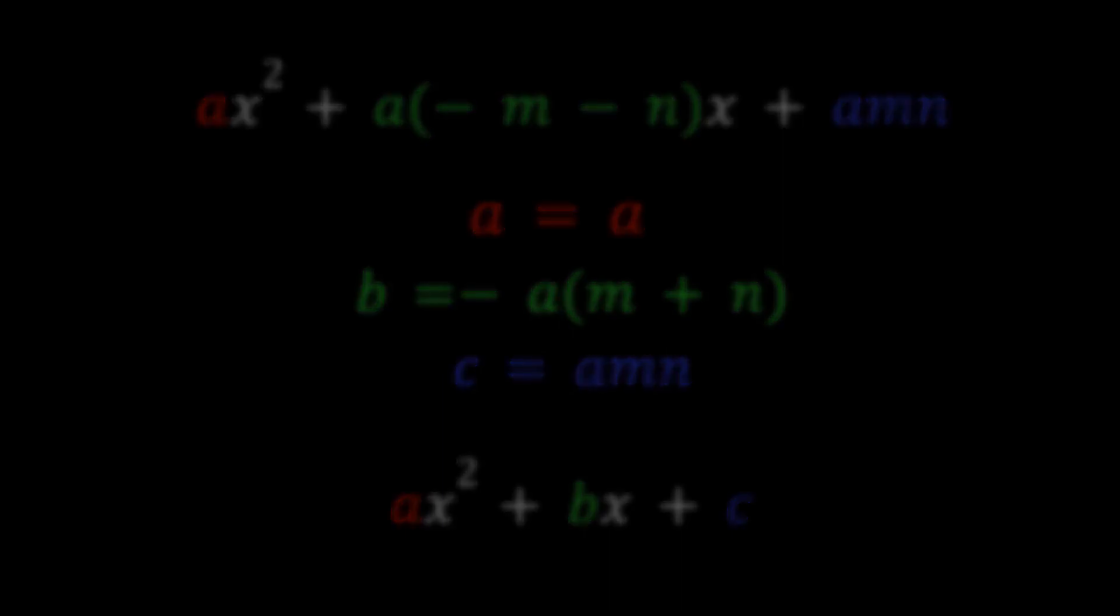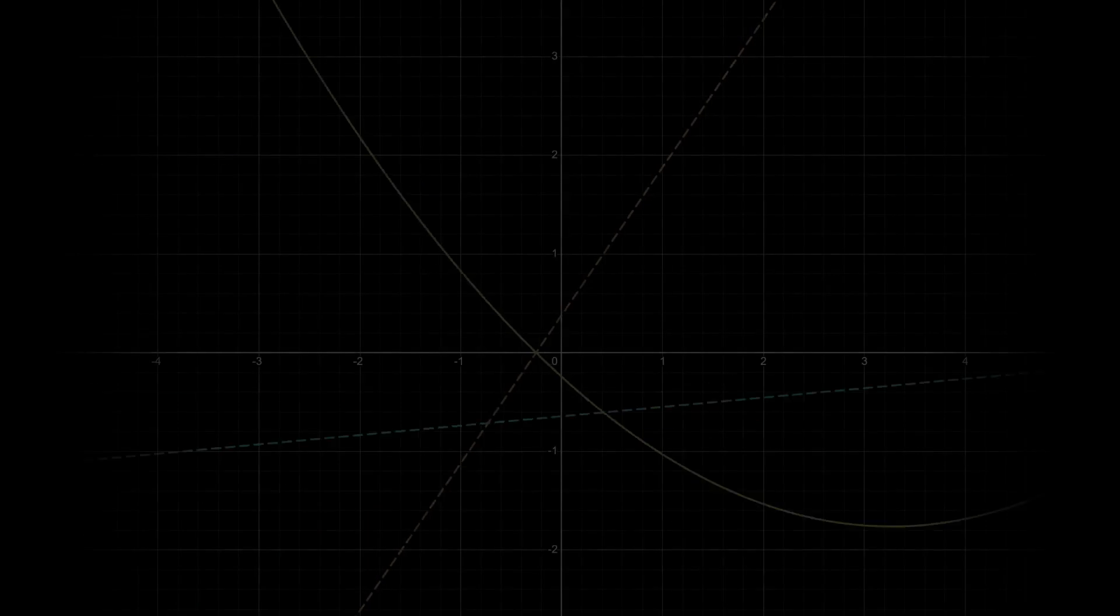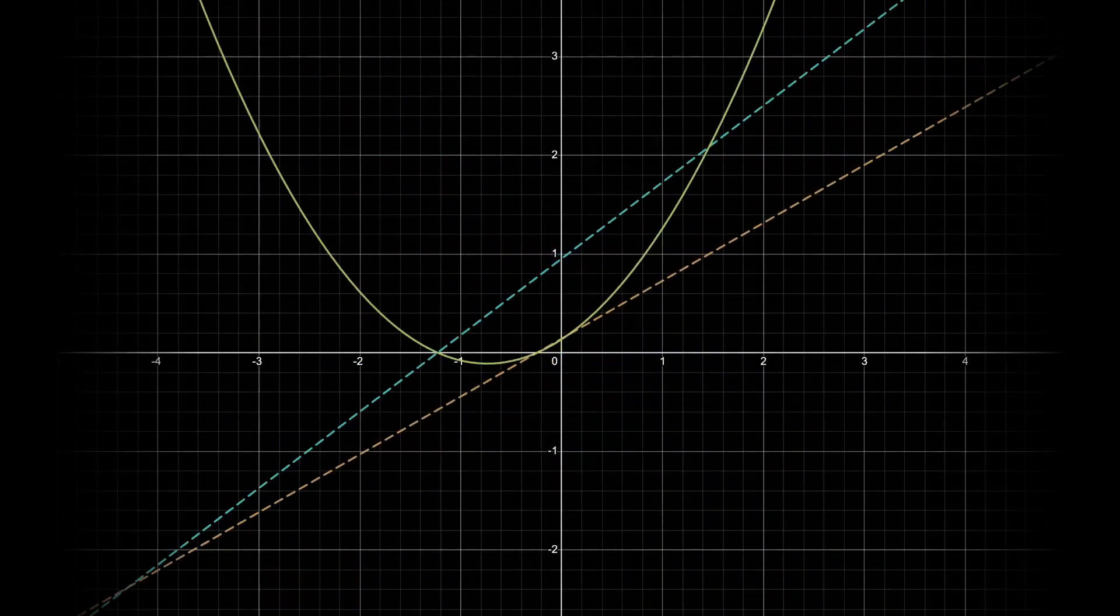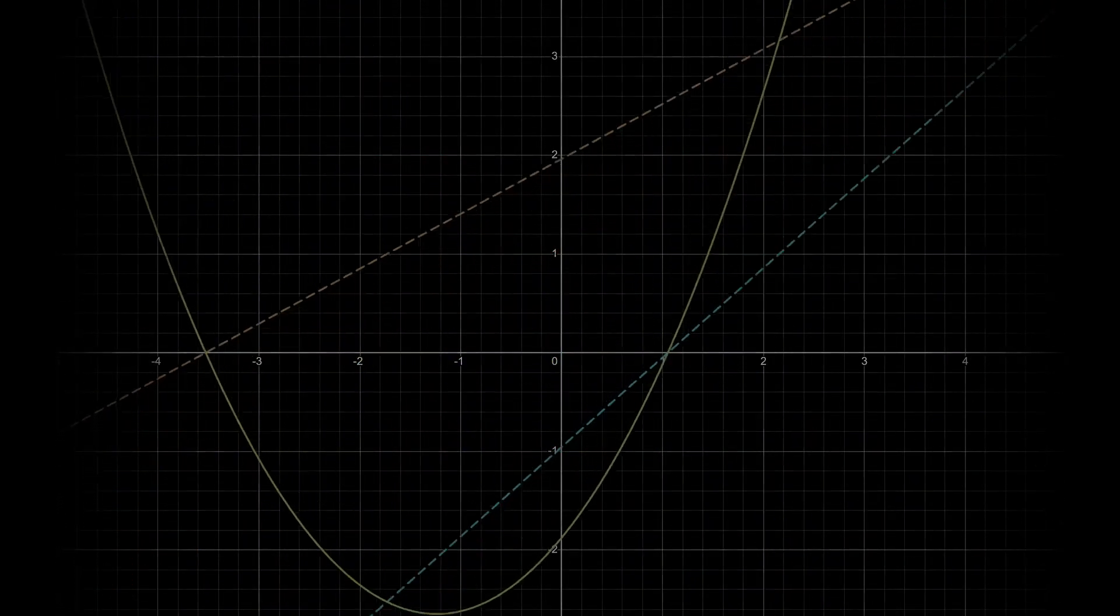Converting from standard to factored form is a little trickier because you need to use the quadratic formula. After all, the linear factors of a parabola have the same x-intercepts as the parabola.